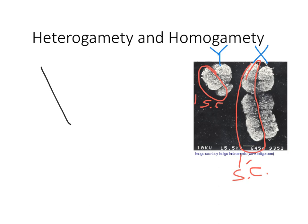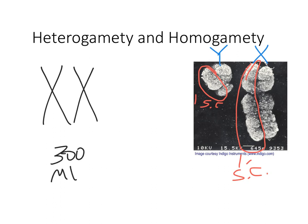The X and Y chromosomes 300 million years ago — 300 MYA — were the same size. They were just another autosome pair, chromosome 23. We can tell this by looking at other species derived from the common ancestor of humans around that time and examining their chromosomes today. From those descendant species, we can predict back what existed 300 million years ago — the X and Y would have had the same genes in the same order.